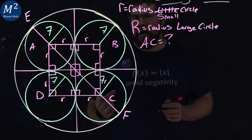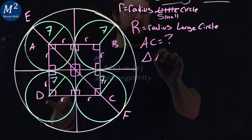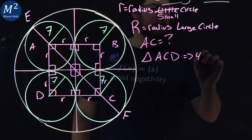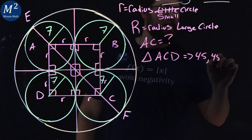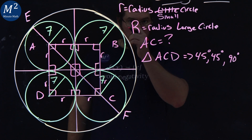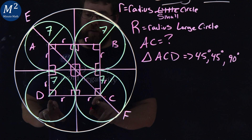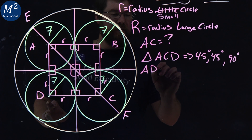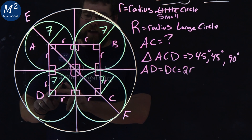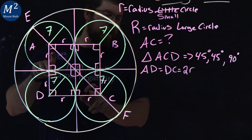Let's make a little triangle — triangle ACD. What do we know about it? It's a 45-45-90 degree triangle. How do we know? It's isosceles. We have 2r as the length of AD, and 2r as the length of DC. So AD equals DC equals 2r. Since the corner at D is 90 degrees, the other two corners must each equal 45 degrees.